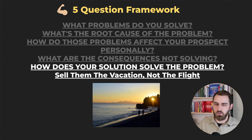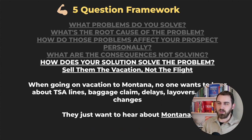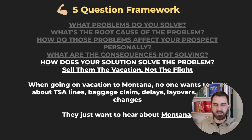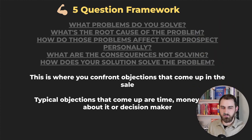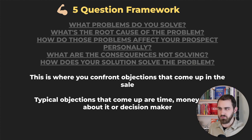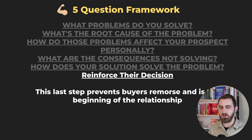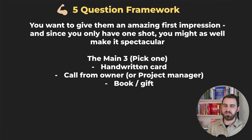Fifth question: how does your solution solve their problem? Sell them the vacation, not the flight. When someone thinks about going to Montana, they don't want to think about TSA lines, baggage claims, delays, layovers, or time changes — they just want to think about Montana. This is where you confront objections — time, money, 'think about it,' or decision makers are the four most common. Peel back and find out what's really behind the objection. After they buy, reinforce their decision to prevent buyer's remorse and give them an amazing first impression.